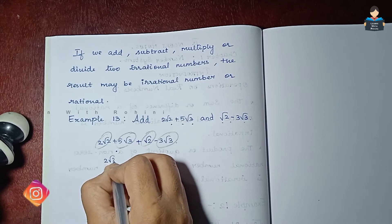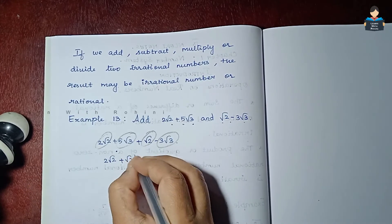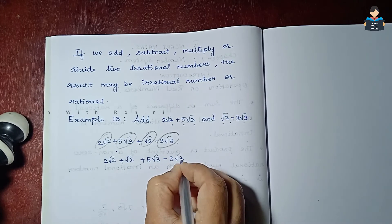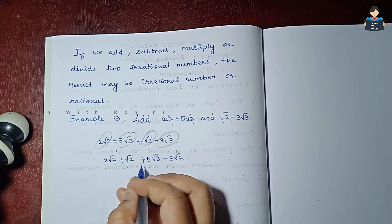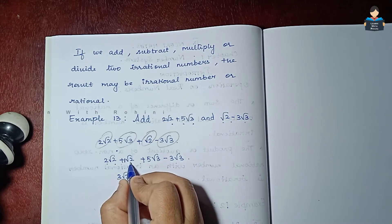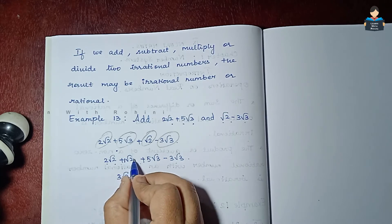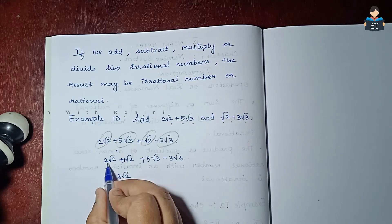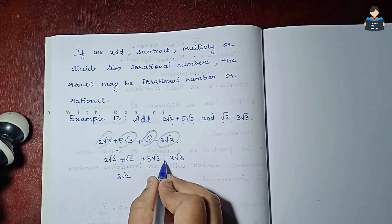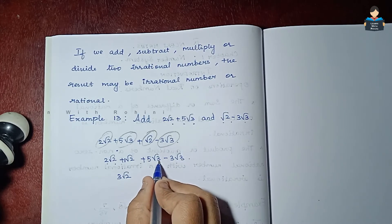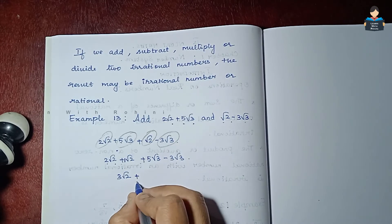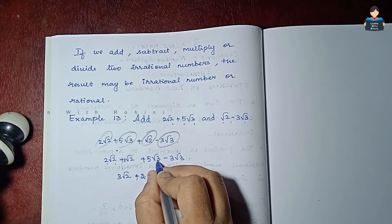So: 2√2 + 5√3 + √2 − 3√3. First collect like terms: 2√2 + √2 and 5√3 − 3√3. For 2√2 + √2, we treat √2 as 1·√2, so 2√2 + 1√2 = 3√2. For 5√3 − 3√3, 5 minus 3 is 2, so the answer is 2√3. The final answer is 3√2 + 2√3.